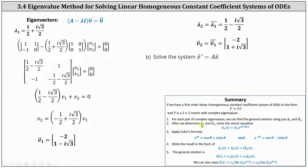Step two: after determining lambda sub one and v sub one, we write the vector equation x one of t equals vector v one times e to the power of a plus ib times t. Step three: we apply Euler's formula. Step four: we write the result in the form x one of t equals x three of t plus i times x four of t. It works out that x three of t and x four of t are two linearly independent solutions, so the general solution is x of t equals c one times x three of t plus c two times x four of t, where x three of t is the real part and x four of t is the imaginary part of vector v one times e to the power of lambda sub one t.